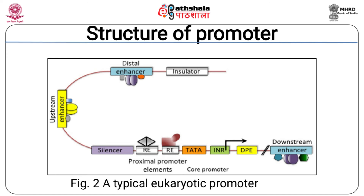A typical eukaryotic promoter has a complex arrangement of multiple clustered enhancer modules interspaced with silencer and insulator elements, which can be located 10 to 50 KB either upstream or downstream of the composite core promoter containing the TATA box, initiator sequences (INR), and downstream promoter element (DPE). In genetic engineering, desired expression of a transgene depends on the promoter used to drive transgene expression. Hence, promoter sequences are very important in transformation experiments. A large number of promoters in various plants have been characterized and are being used in developing transgenic plants.